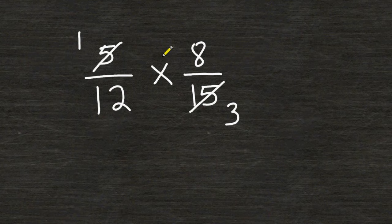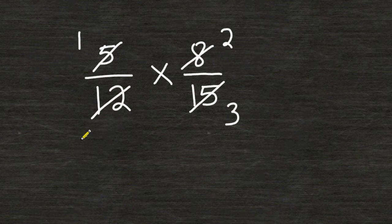And we can also reduce the fraction 8/12. 4 is the common factor of 8 and 12 and 4 can go into 8 twice and 4 can be divided into 12 three times.